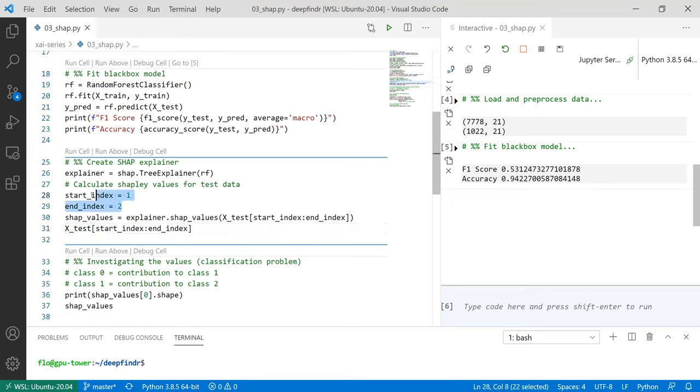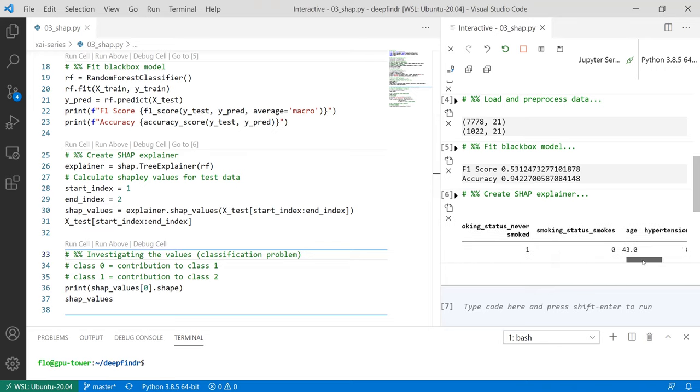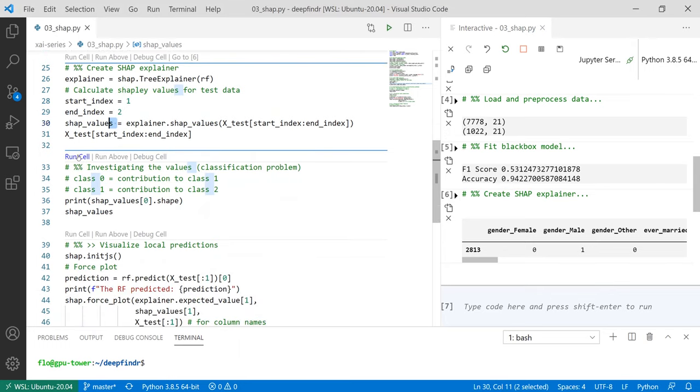So as I previously mentioned Shap is a local explainability technique but can also be extended to global explainability and that's why I select some individual instances in our test data set. So in this example I go from the first data point to second that means I only get the first data point. So if I run this that's the data point, these are the features age and gender and so on, and now I calculate the Shapley values with the shap_values function on our explainer object and then we get the Shapley values for this single instance.